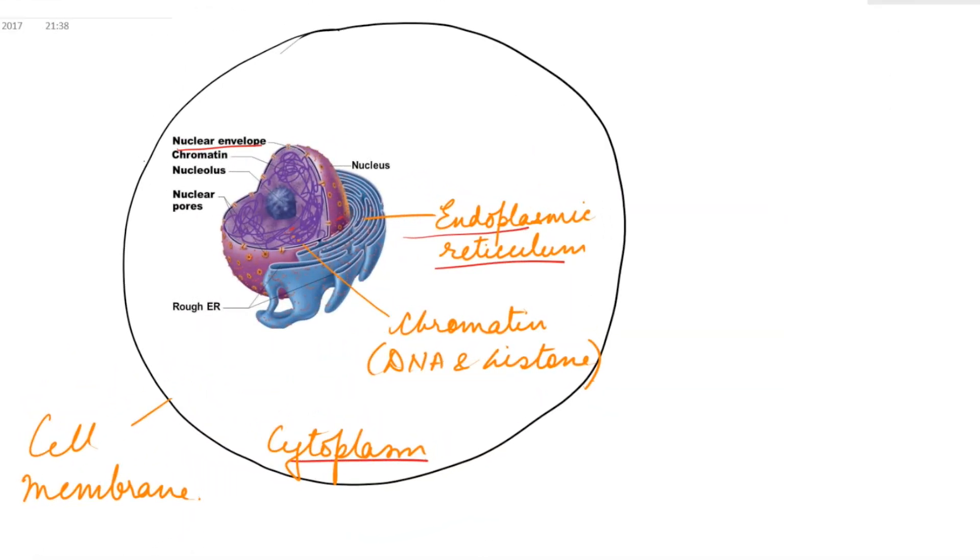The chromatin present in the nucleoplasm is made up of DNA and histone proteins, and this chromatin coils to form chromosomes during cell division.